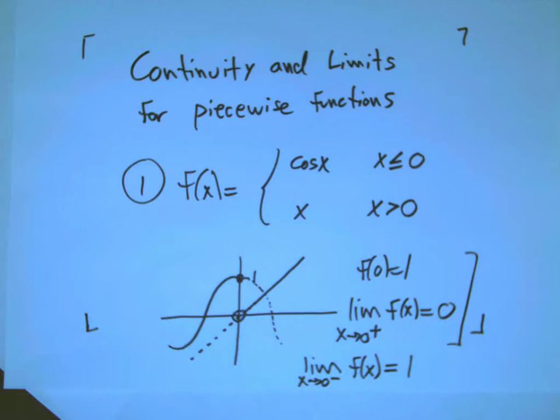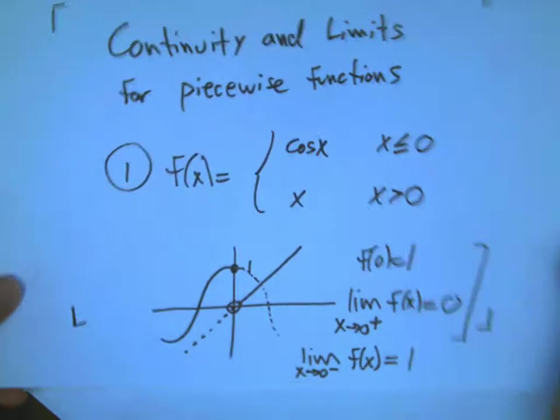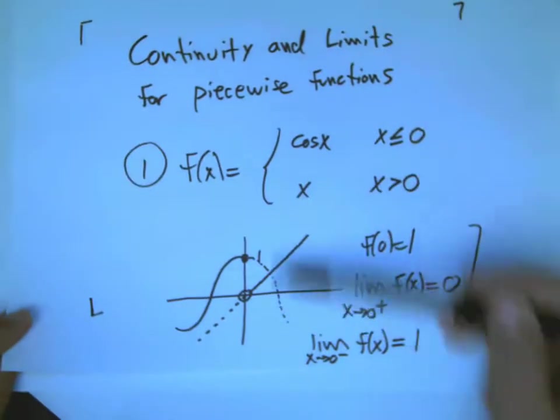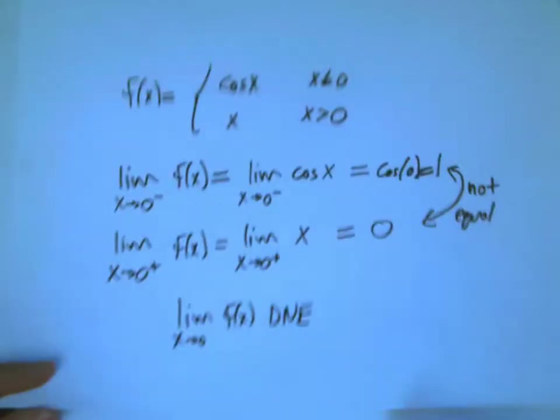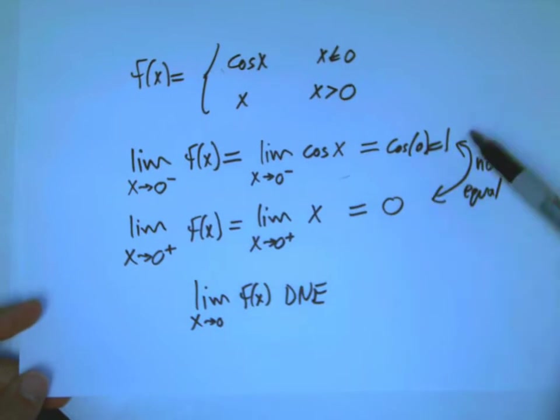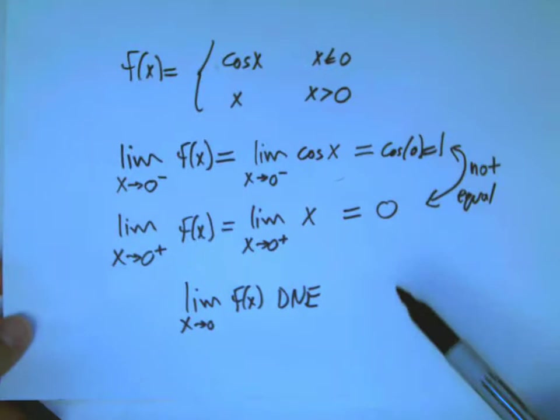All right, we're back to continuity and limits for piecewise functions. This is the second installment of this topic. Last time I looked at this function and demonstrated that it's not continuous at zero, and that amounted to taking two one-sided limits and seeing that they were not equal. That's often what you end up doing for a piecewise function.